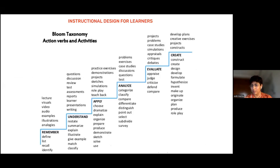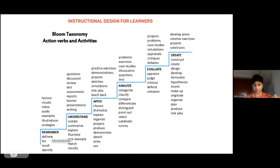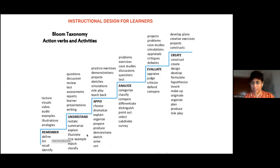We started with Bloom's, and I'd like to close with Bloom's as well. This table shows all the Bloom's taxonomy verbs — remember, understand, apply, analyze, evaluate, and create. Under 'remember' you have: define, list, recall. Under 'understand' you have: restate, summarize, explain, illustrate, give example, match, classify. These are great examples of verbs to start a question to assess a particular skill.